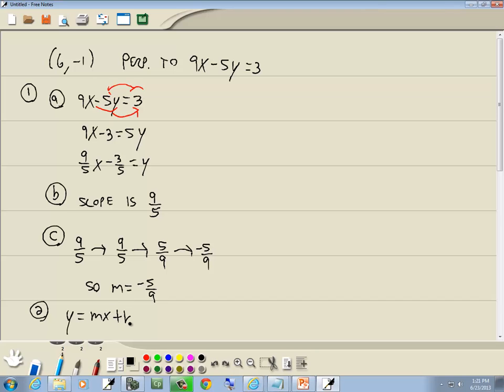Step 2: Plug in the given point for x and y. This 6 will be our x. The negative 1 is our y. So that negative 1 is equal to M, which we just said was negative 5/9, times x, which is 6, plus b.